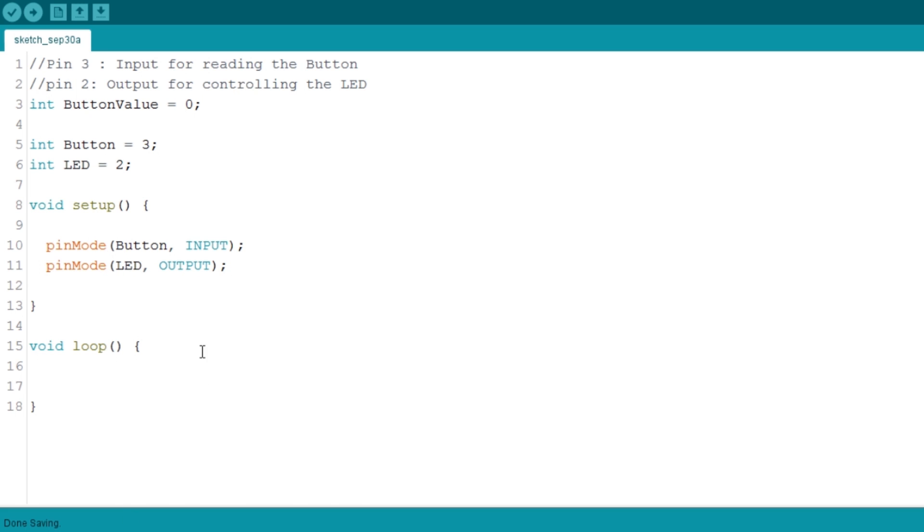In the loop function, the first thing we should do is to read the button state and store it in the variable so that we can use it later. ButtonValue equals digitalRead, as this is a function, and in the parameter, the pin from which to read. Every time the program loops through here, it will update the variable with the state of the button.